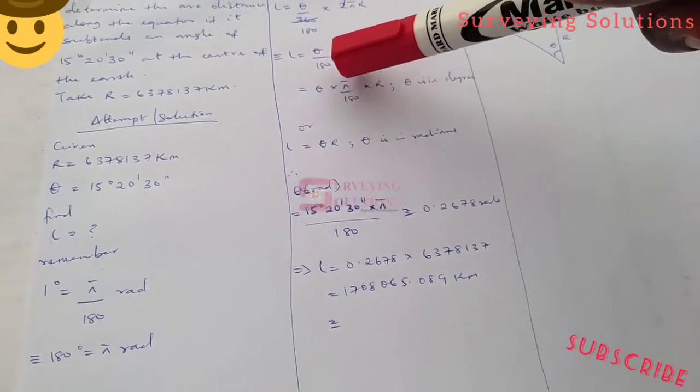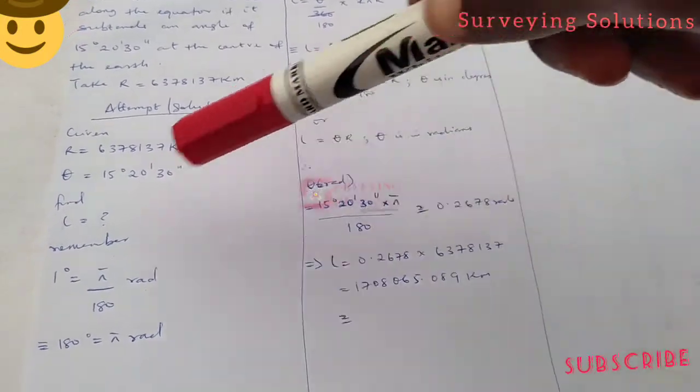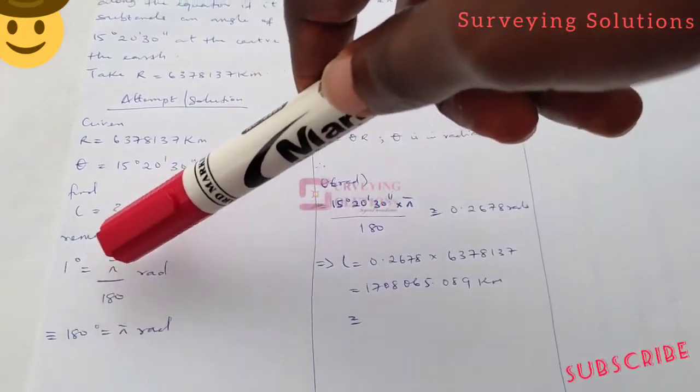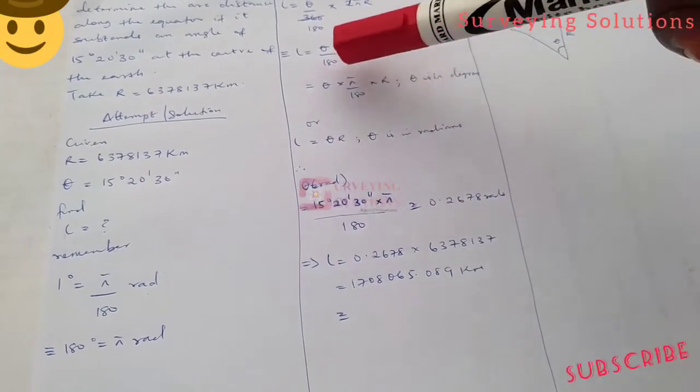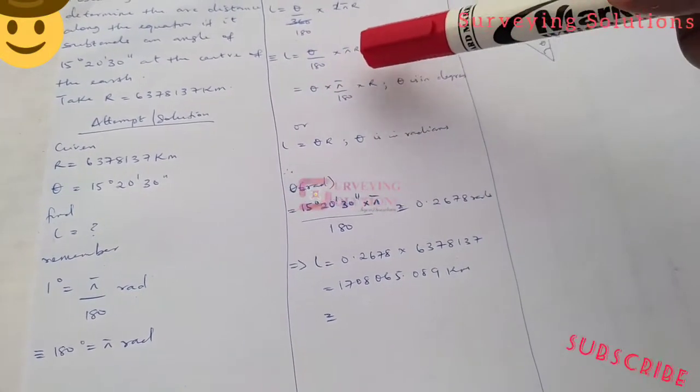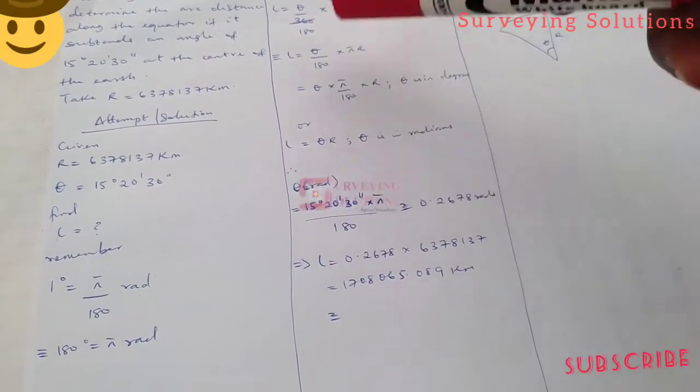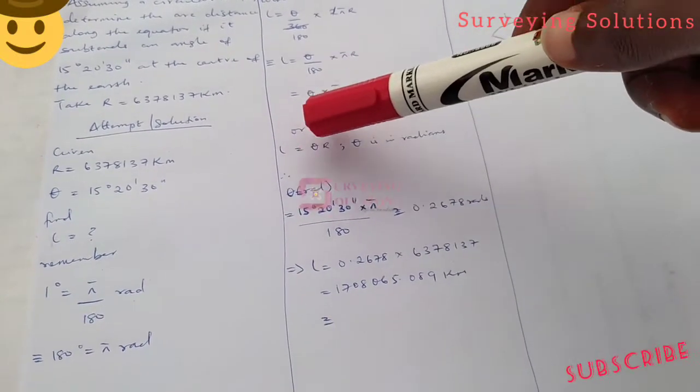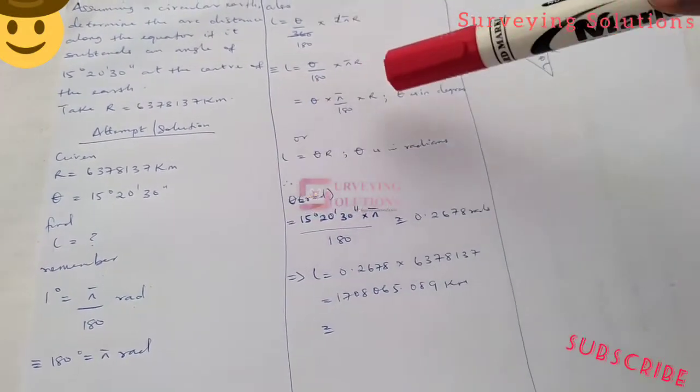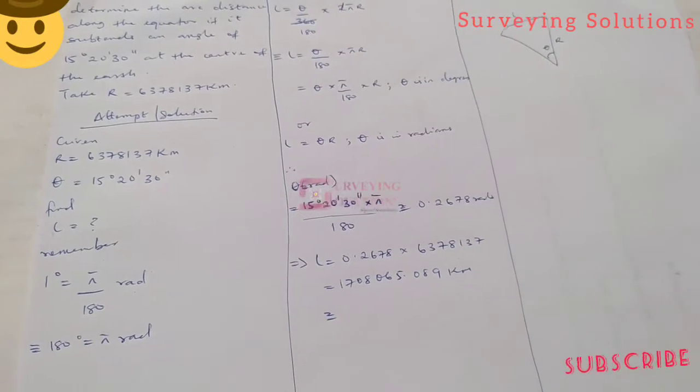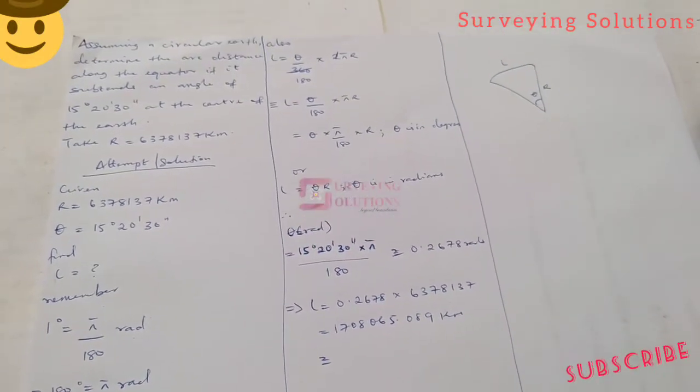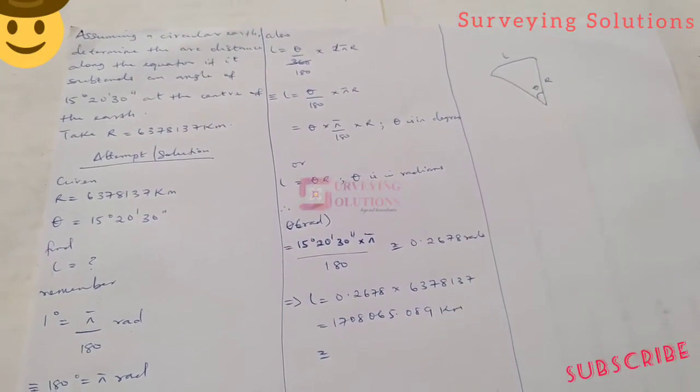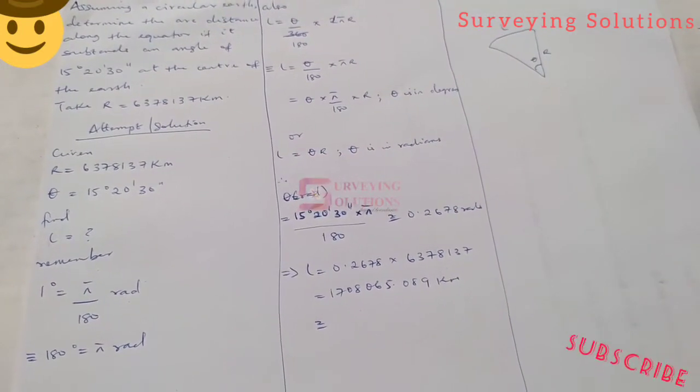When we want to determine the arc length, our angle must be in radians. So having established those facts, we need to convert the angle we have in degrees to radians.